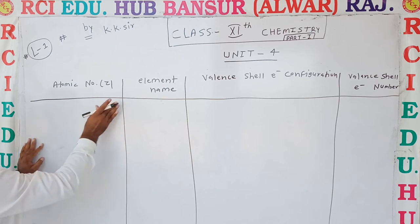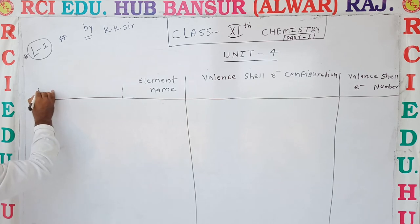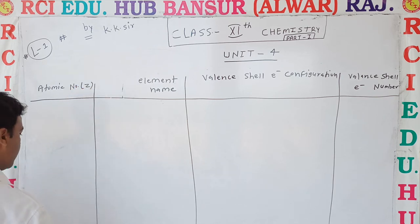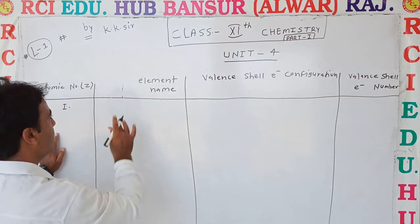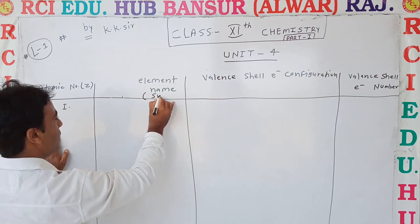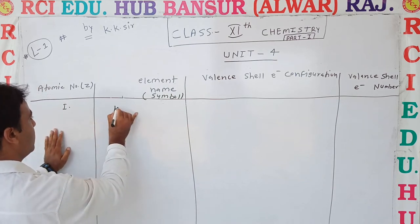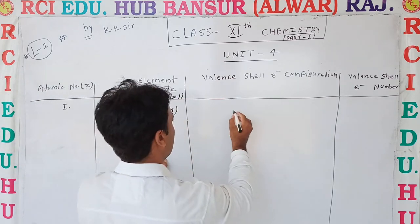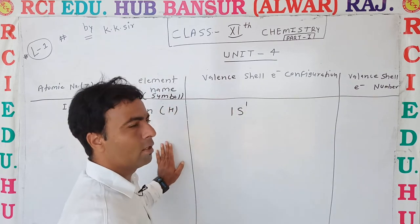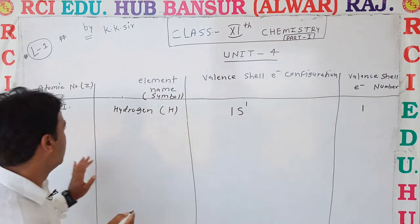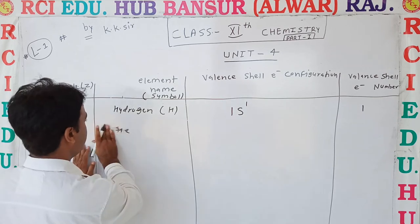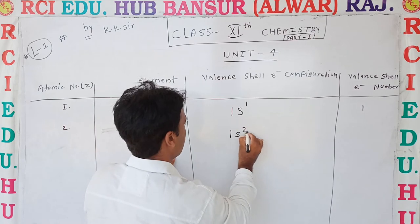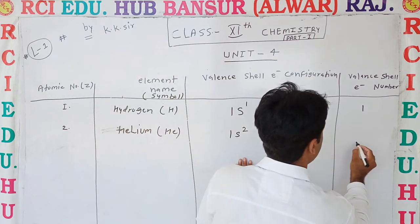Atomic number 1 is Hydrogen, symbol H. Its valence cell electronic configuration is 1s1, and the valence cell electron number is 1. Next, atomic number 2 is Helium, symbol He. Its valence cell electronic configuration is 1s2, and the valence cell electron number is also 2.